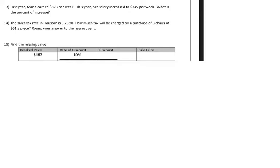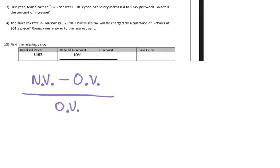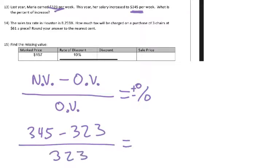Number 13 is one you're likely to see on an exam. Last year, Maria earned $323 per week. This year her salary increased to $345 per week. What is the percent increase? The formula is: new value minus original value, divided by original value, equals percent change. The new value is $345, the original is $323. So 345 minus 323 gives us 22, and we have 22 over 323.